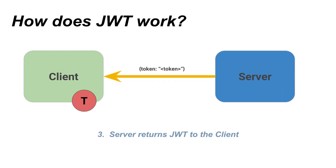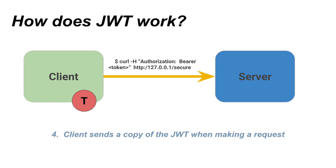This token is returned to the client, and it's up to the client to store this data and send it along as required for any request to the server. The next time our client makes a request along a secure route, it sends along the JWT token.